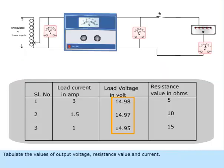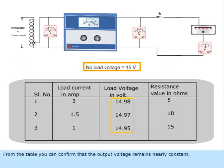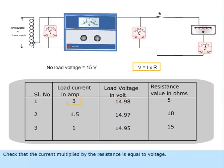Tabulate the values of output voltage, resistance value and current. From the table, you can confirm that the output voltage remains nearly constant. Check that the current multiplied by the resistance is equal to voltage.